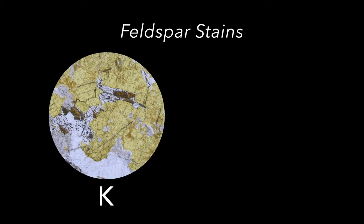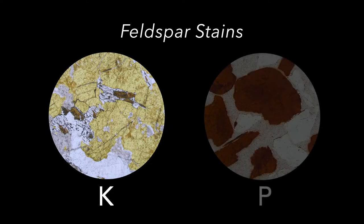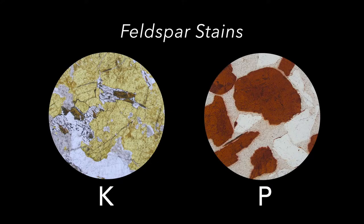K-stain tints potassium-bearing feldspar yellow. P-stain tints the calcium-bearing end-member, anorthite, red. If necessary, K and P stains can be used together.